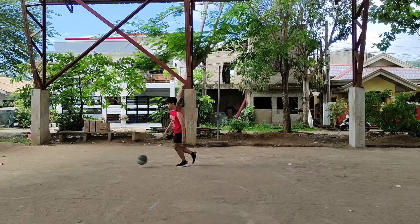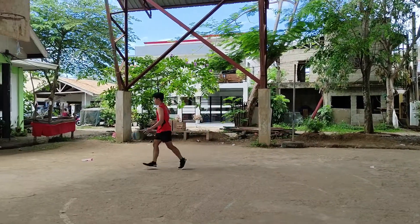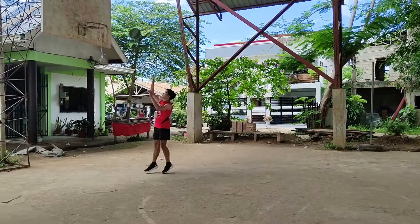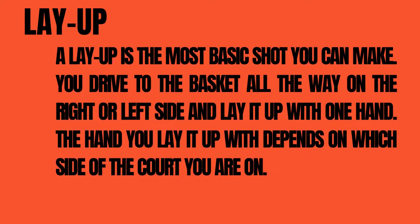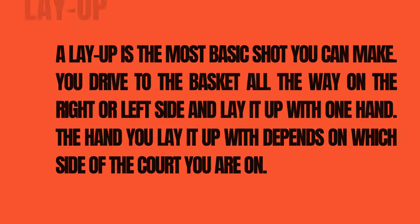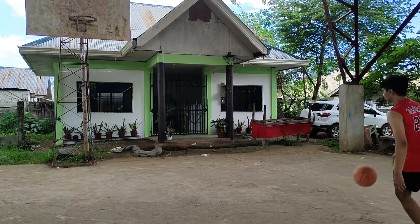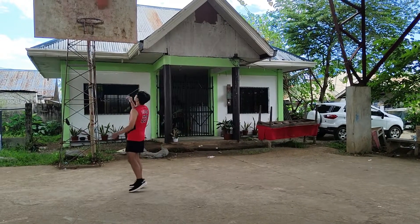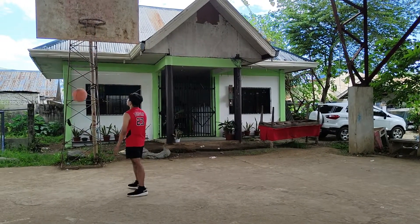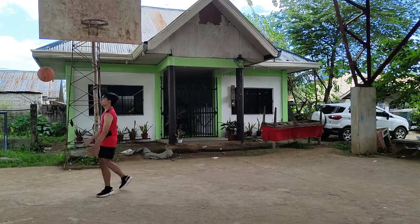Lastly, the third essential skill is shooting. These five are the common types of shooting in basketball. The first type is a layup. A layup is the most basic shot you can make. You drive to the basket all the way on the right or left side and lay it up with one hand. The hand you lay it up with depends on which side of the court you are on.